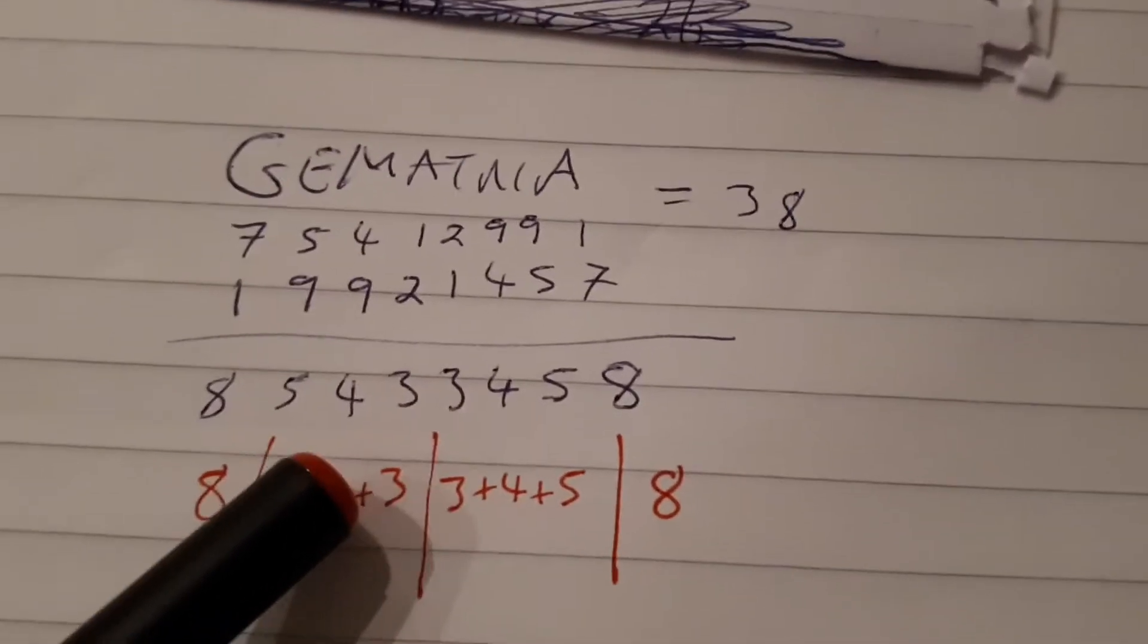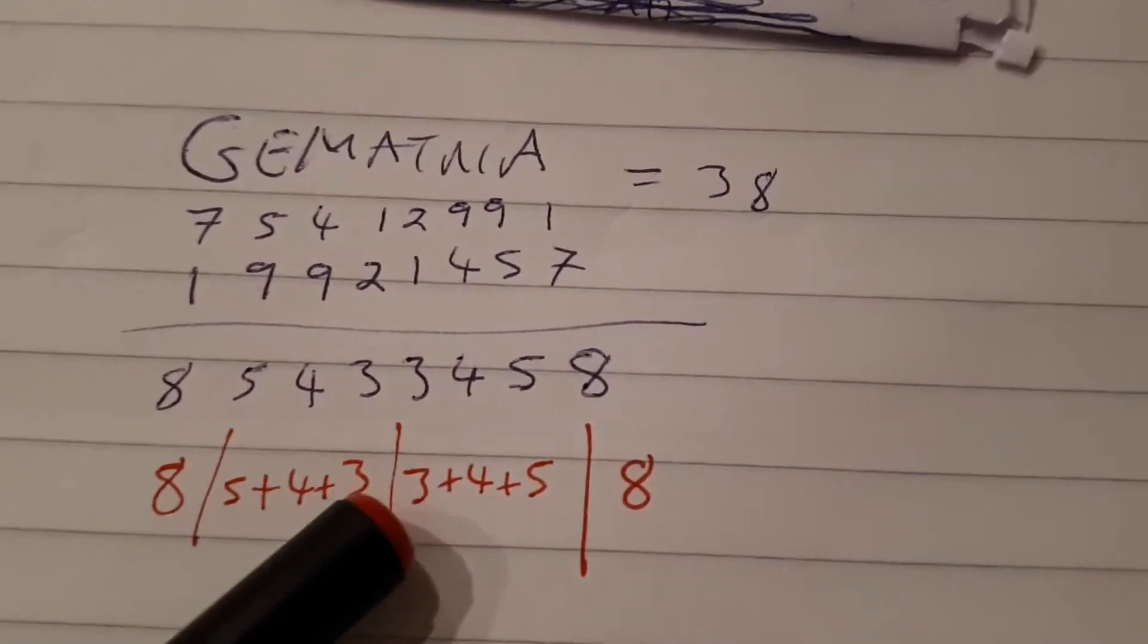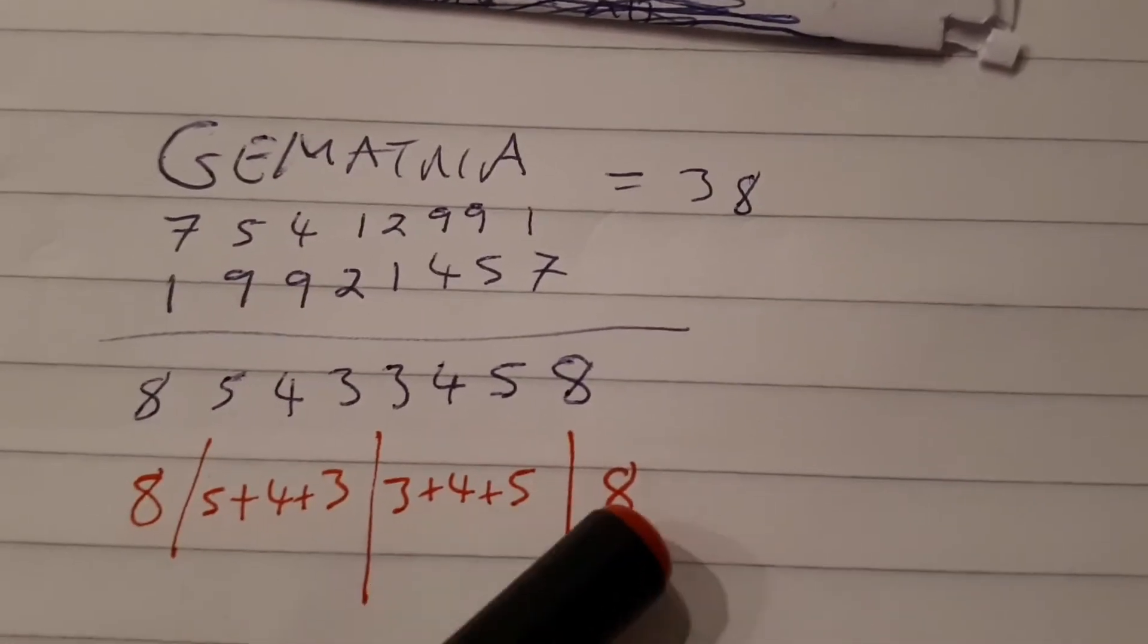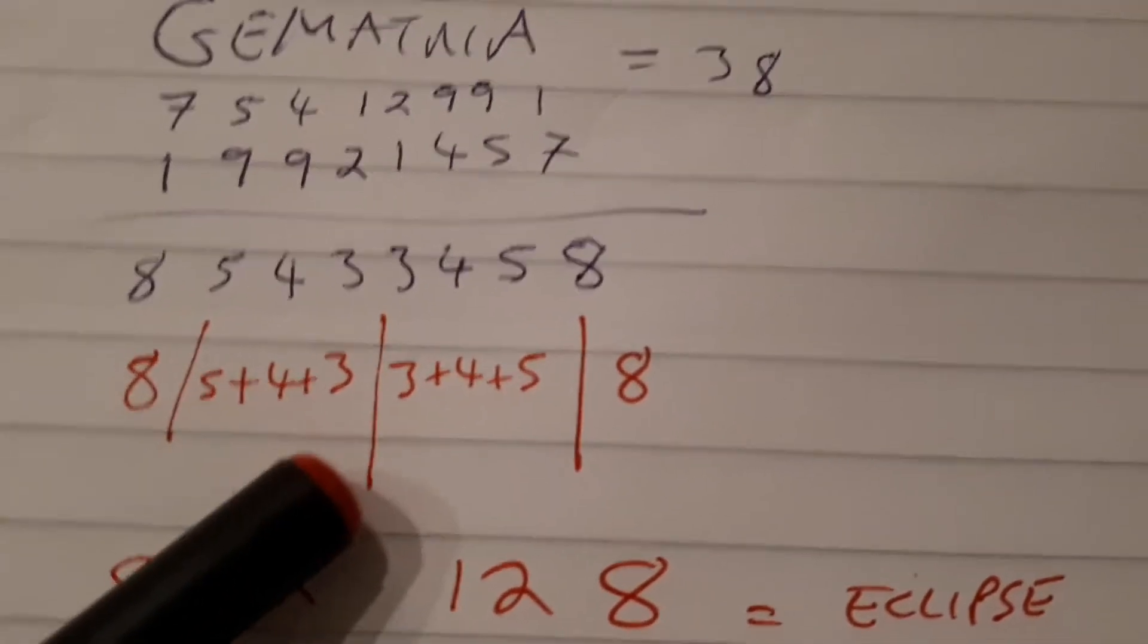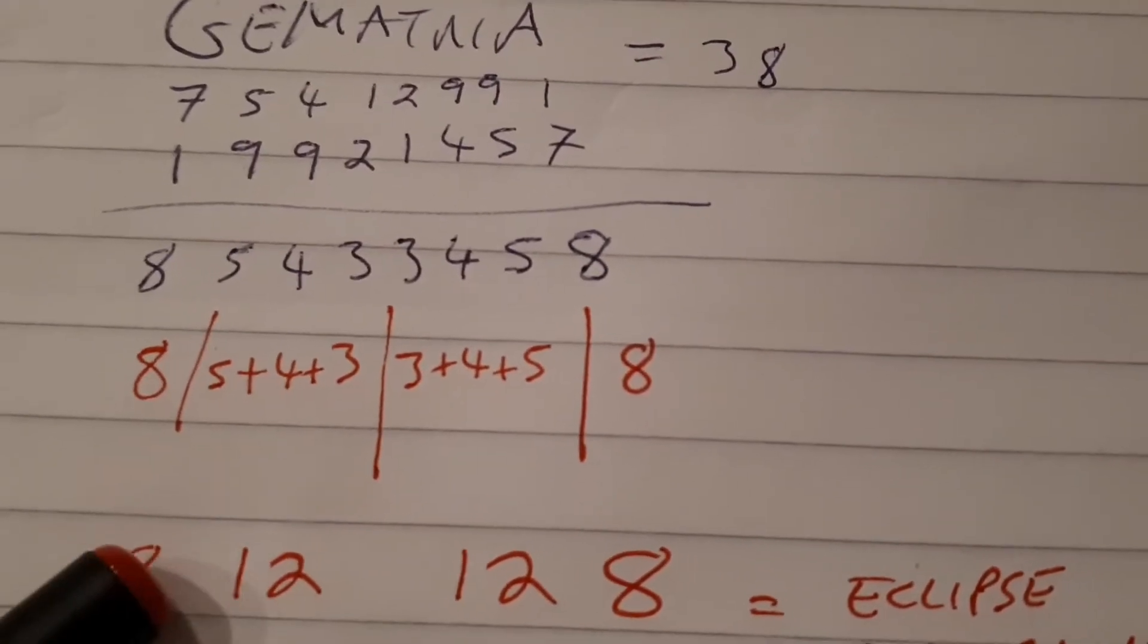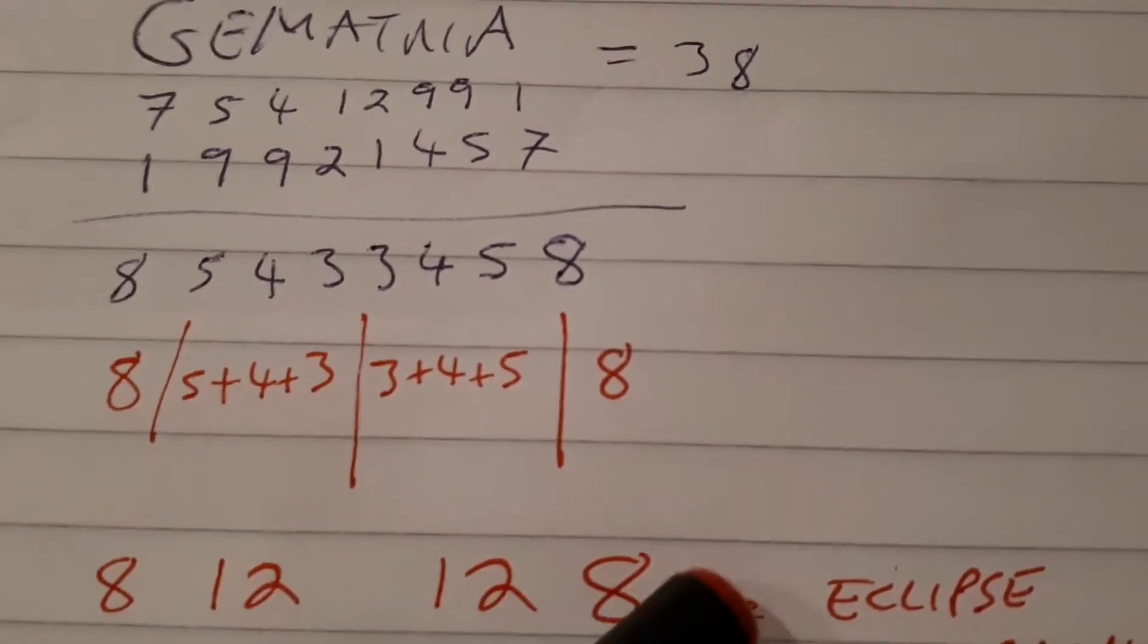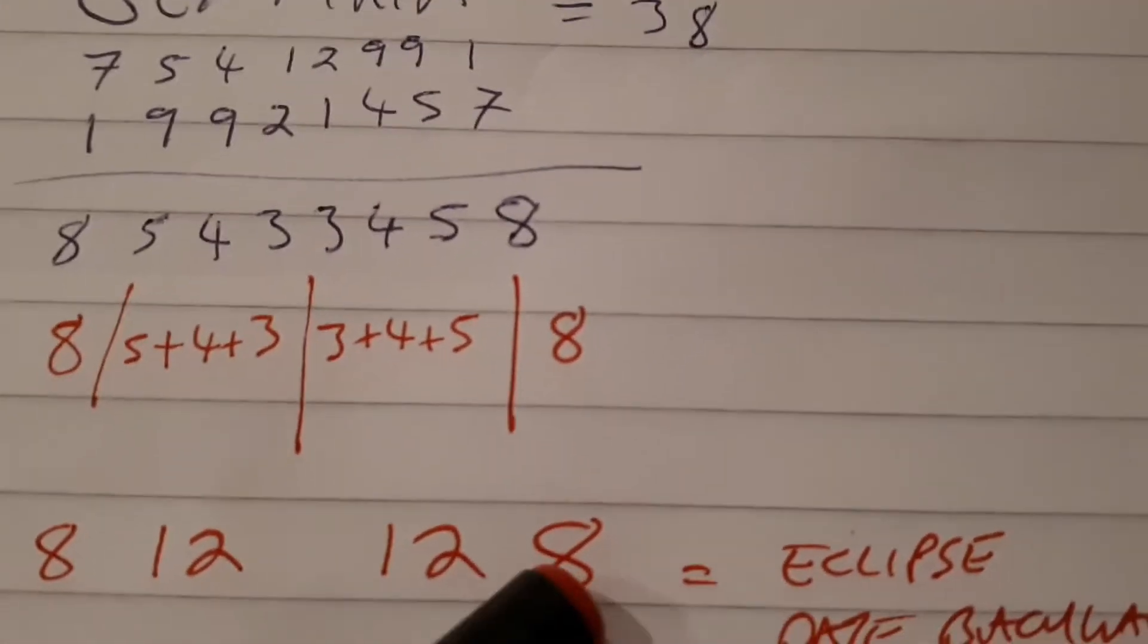But also obviously as well, the 8, 5+4+3, 3+4+5—it's the 12 again: 8, 12, 12, 12, 8. Eclipse date backwards.